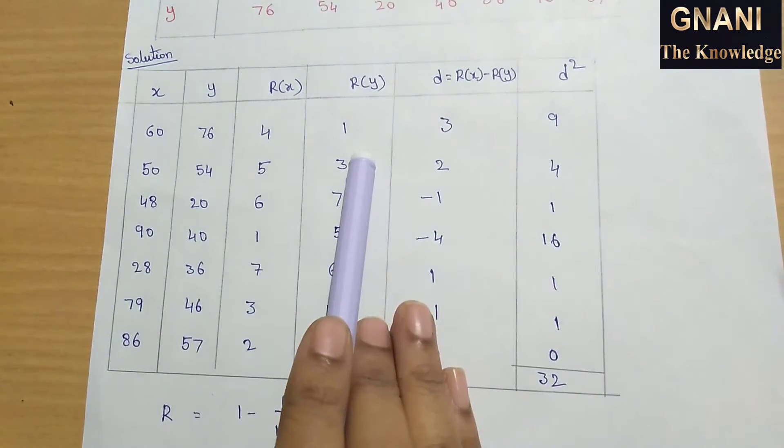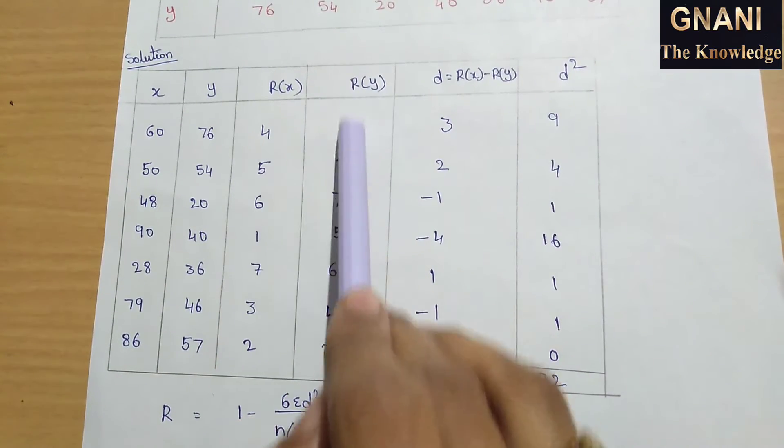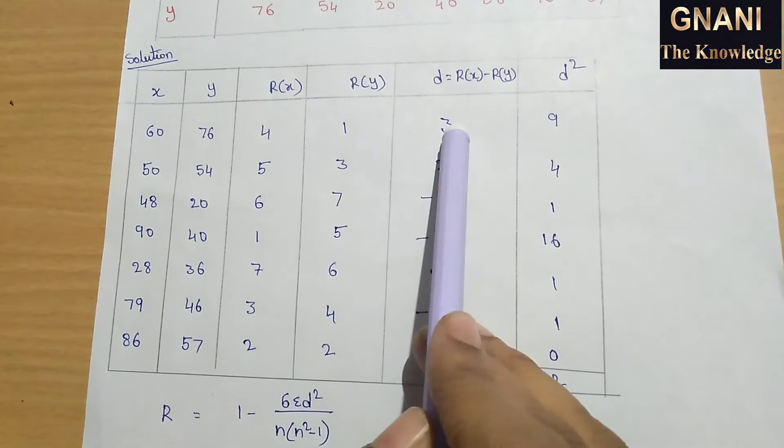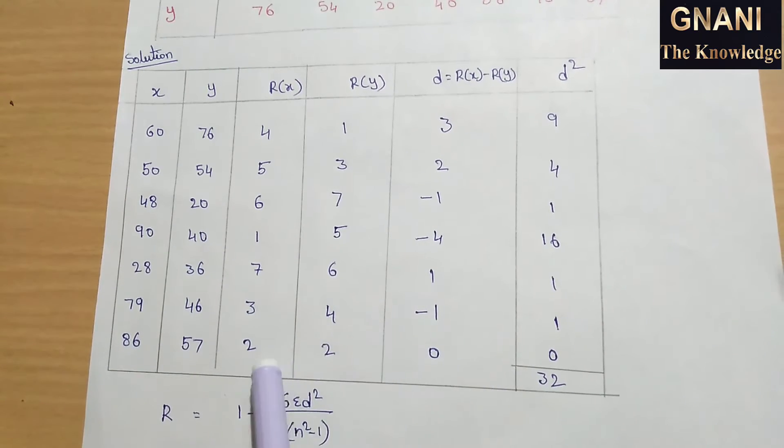x series ranks, y series ranks, difference: 4 minus 1 equal to 3, 5 minus 3 is 2, 6 minus 7 is minus 1, 1 minus 5 is minus 4, 7 minus 6 is 1, 3 minus 4 is minus 1, 2 minus 2 is 0.